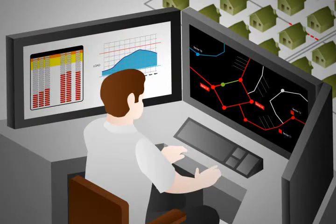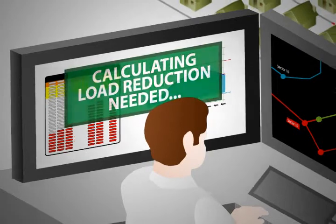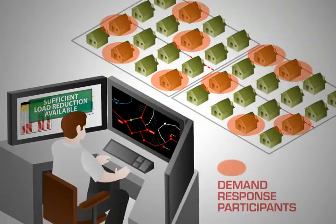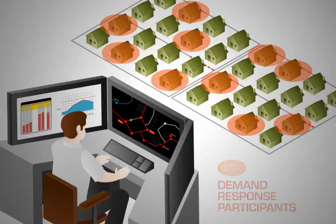The system will develop a plan of action with the amount of energy usage that needs to be decreased on the circuit to alleviate the problem. The system will also identify surrounding demand response participants and the amount of energy available to be decreased on the circuit.